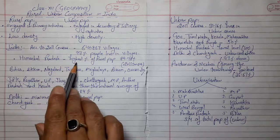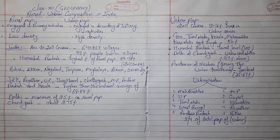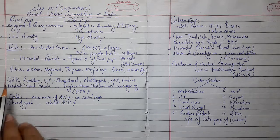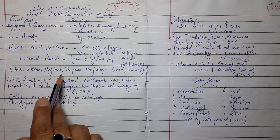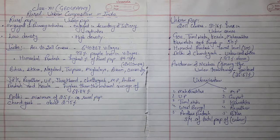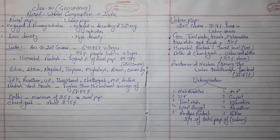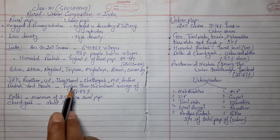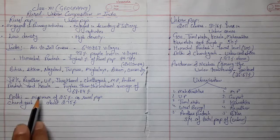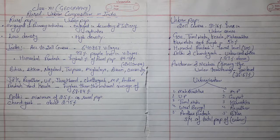Himachal Pradesh has the highest percentage of rural population according to the 2011 census. After that, Bihar, Sikkim, Nagaland, Tripura, Meghalaya, Assam, and Odisha are states where eighty percent of the total population lives in villages, which is higher than the national average of 68.84 percent.